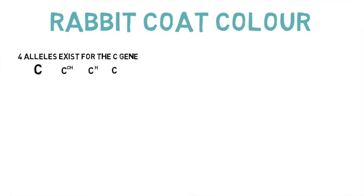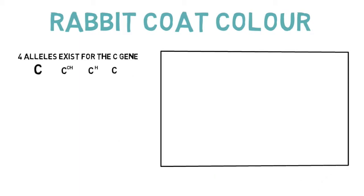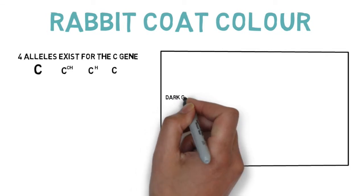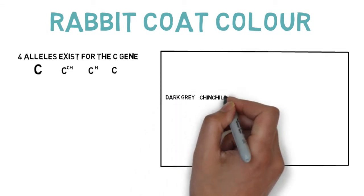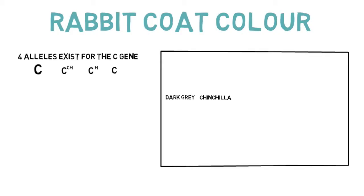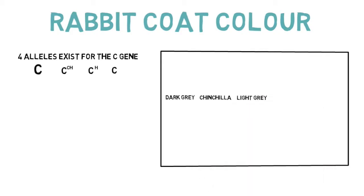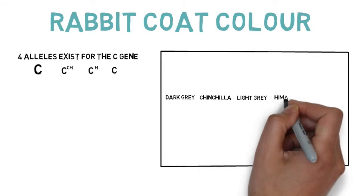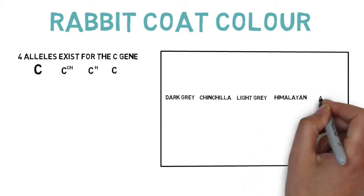There are five possible phenotypes for rabbit coat color. They are dark gray, chinchilla, light gray, Himalayan, and albino.